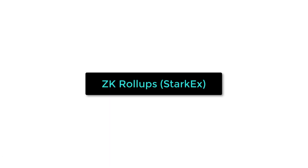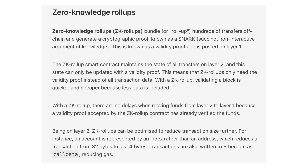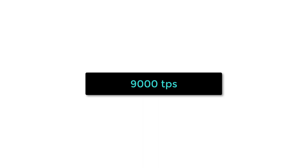Technically, Immutable X uses zero-knowledge rollups based on the StarkEx technology. This means Immutable X aggregates many transactions into a single Ethereum transaction, which reduces the gas cost of each individual transaction. It can reach 9,000 transactions per second, compared to 15 transactions per second for Ethereum.